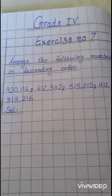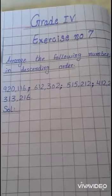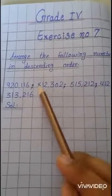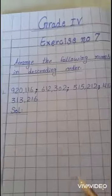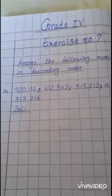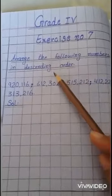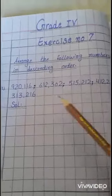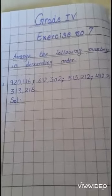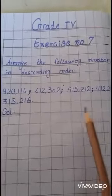Assalamu alaikum, Grade Four. In exercise number six we learned about ascending order, and today in exercise number seven I will tell you about descending order. In ascending order we arrange numbers from smallest to largest, but in descending order we will arrange them from largest to smallest number.